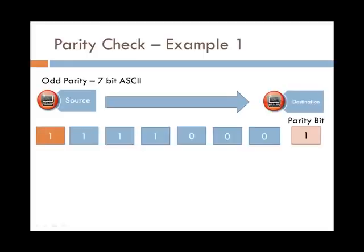We have a data packet of 1, another 1, another 1, another 1, and 3 0's. So if we add the total number of 1's in the 7-bit ASCII code, there are 4. Now as 4 is an even number and the source computer is sending as odd parity, the parity bit must be a 1 to result in an odd number, which is 5.